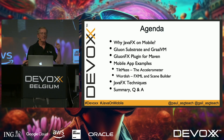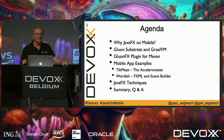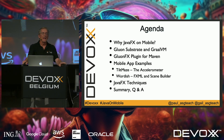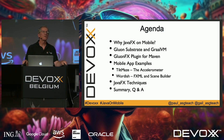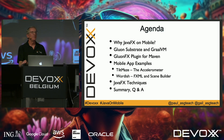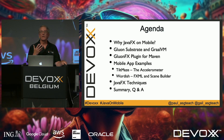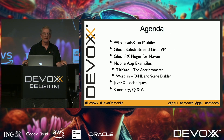We have two demos today. The first is Tilt Maze, which is in the app stores — you're welcome to download it. It uses the accelerometer on your cell phone as you move around a maze, and we show how to do this in a device-agnostic way. The other demo is a popular New York Times game called Wordle. We looked at Wordle and said this would be a great way to show people how to write proper JavaFX code.